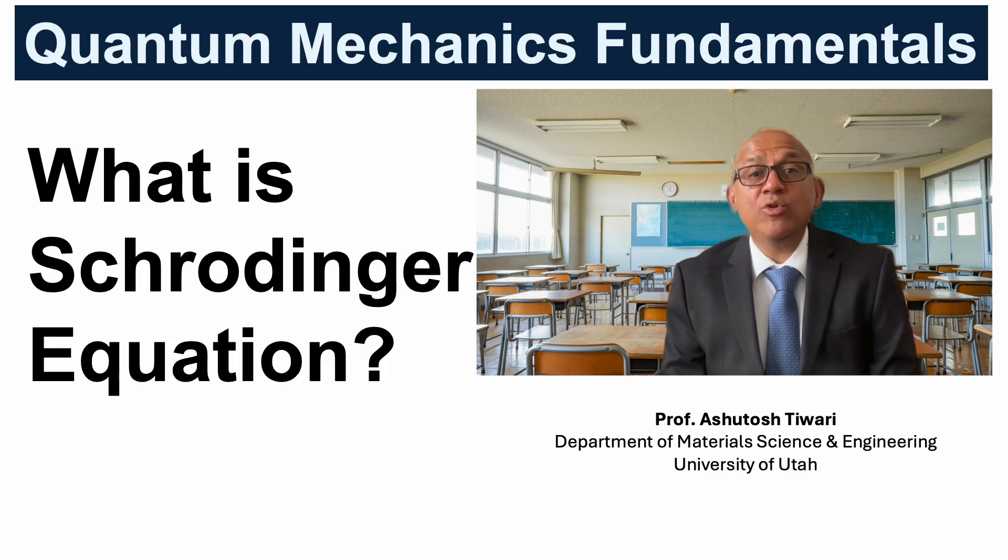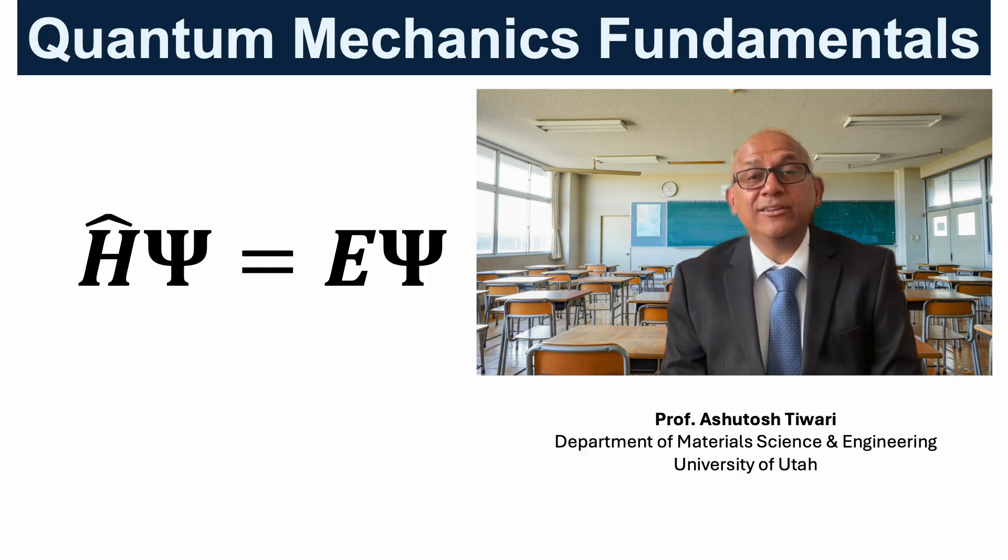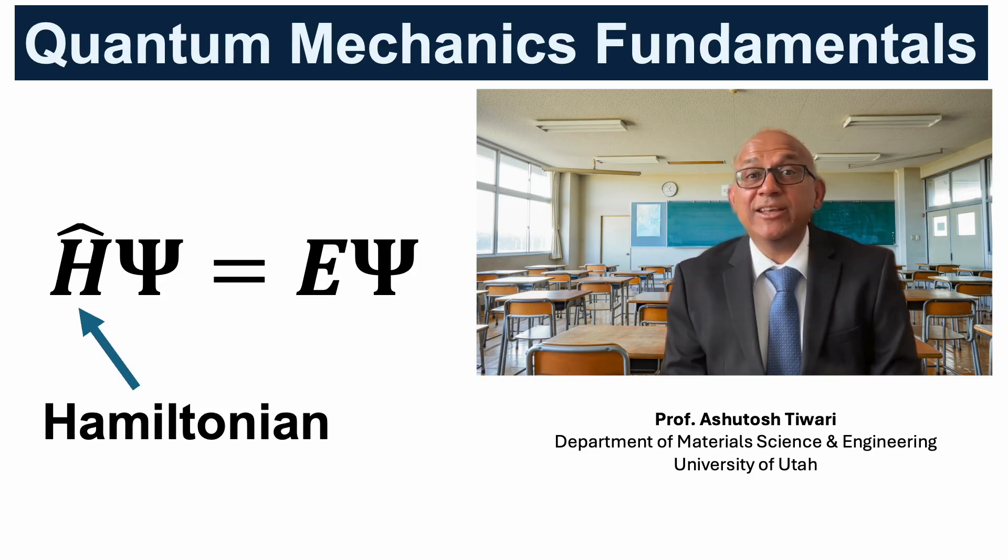The Schrödinger equation is the backbone of quantum mechanics, just as Newton's laws are the backbone of classical physics. It is written as Ĥψ = Eψ, where Ĥ is the Hamiltonian, ψ is the wave function, and E represents the energy value.